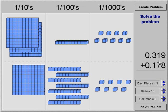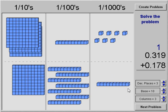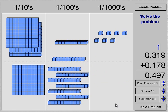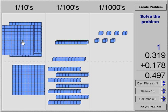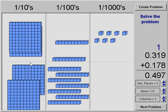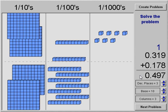Now we have three place values to the right of the decimal. We have three hundred nineteen thousandths added to one hundred seventy-eight thousandths. Again, we start grouping on the right-hand side — eight, nine, ten — so we turn those into a group of one hundredth and move that over. We combine the rest: one through nine, then one through four. Our sum of three hundred nineteen thousandths plus one hundred seventy-eight thousandths is four hundred ninety-seven thousandths.